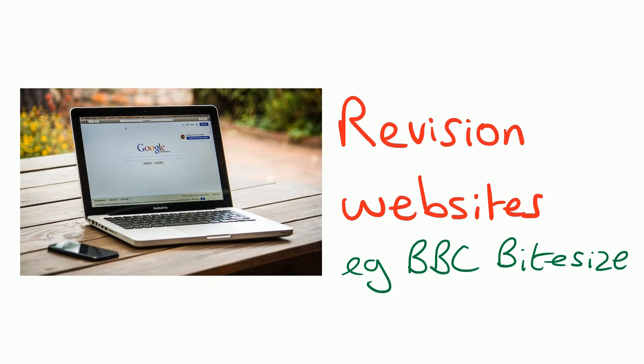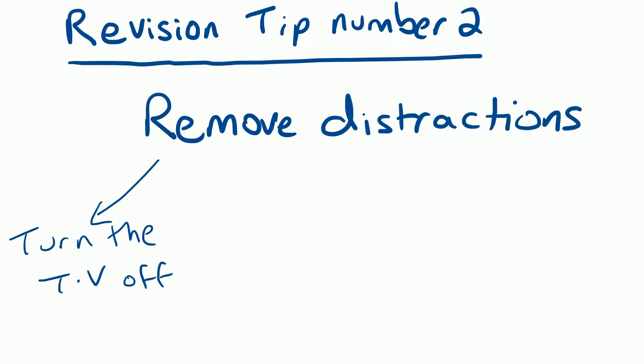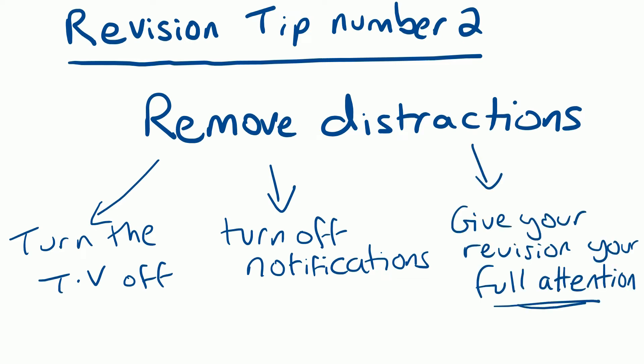So there are all the revision strategies - there are others as well. Make sure you pick a couple that work for you. Revision tip number two is remove distractions. Turn the TV off, turn off notifications on your phone. We all know how distracting it is if we get a ping and we're wondering who the text is from. So what we're saying is give your revision your full attention.